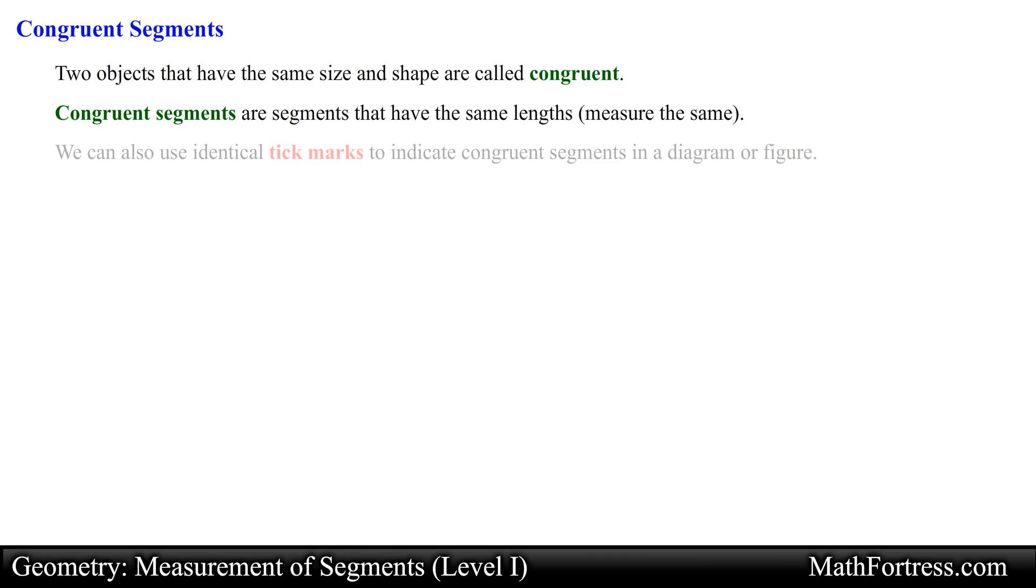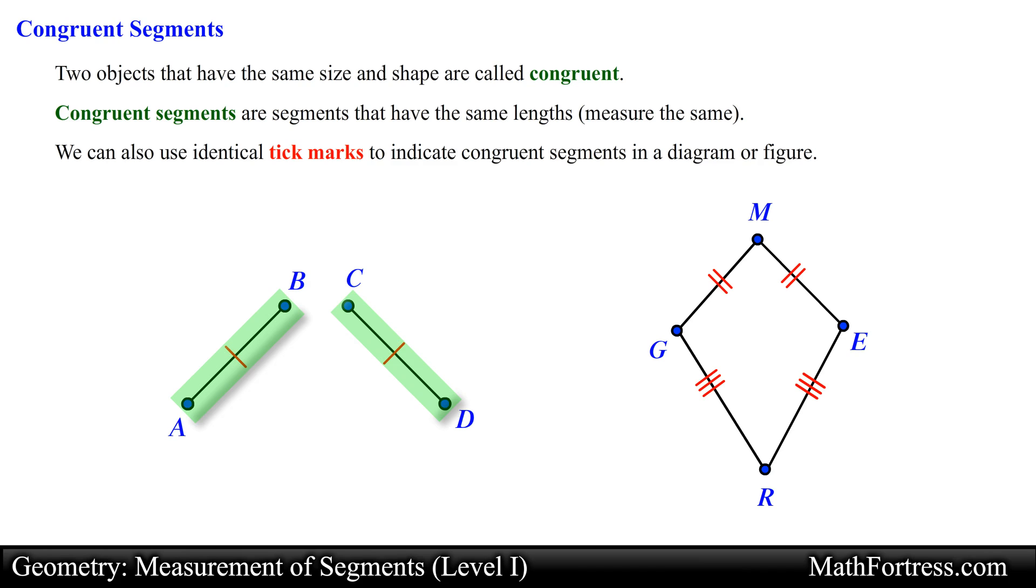We can also use identical tick marks to indicate congruent segments in a diagram or figure. For example, in the following figures, a single tick mark is used to show that these two line segments are congruent. If multiple segments need to be labeled as congruent, then we can use double or triple tick marks. For example, double tick marks are used to show that these line segments are congruent, and triple tick marks are used to show that these line segments are congruent.